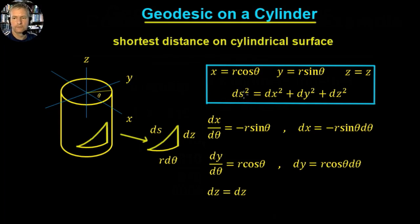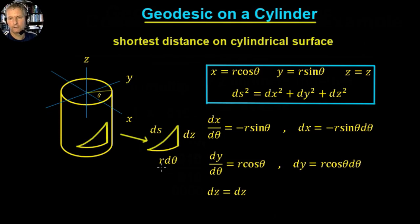Our position element ds squared equals dx squared plus dy squared plus dz squared — just an extension of Pythagoras. We can get an intuition from a small triangle drawn on the surface: the height is dz and the distance around is r dθ, being an infinitesimal arc. So ds squared equals dz squared plus r squared dθ squared, which we'll now formally derive.